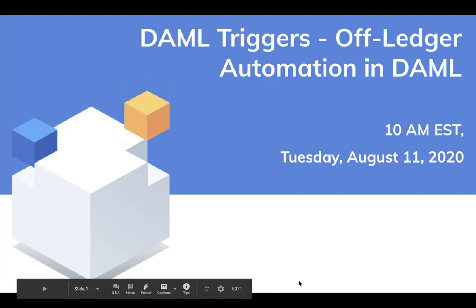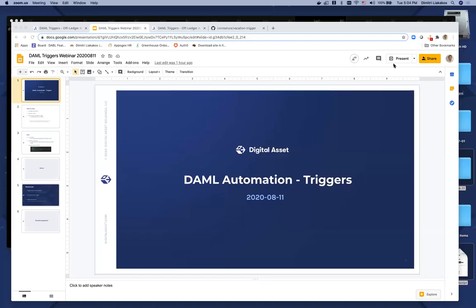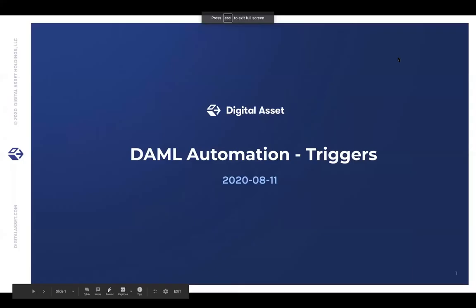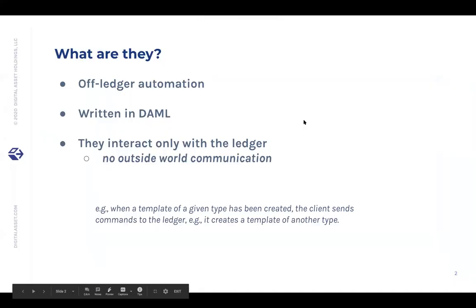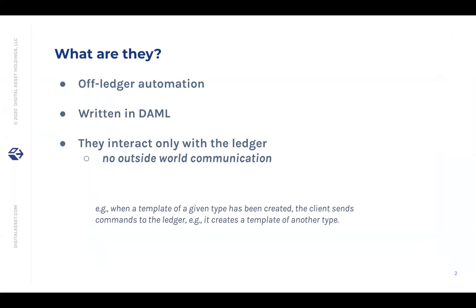Thank you, Manish. I'm not going to bore the audience with more slides. As mentioned, DAML Triggers are for ledger automation. They're written in DAML, so you get the usual strict typing and power of DAML that we're used to in our smart contracts. They interact only with the ledger — you would not use a trigger to call an external API. You would use it for simple automation and syncing tasks that are triggered off the ledger.